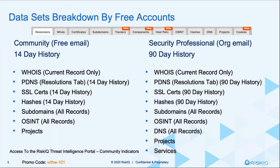This gives another overview of the breakdown in data sets by free accounts. Again, as a community user, you're only going to get 14 days of history for our PDNS, SSL, as well as hash information. As a security professional with an organizational license and corporate domain, you'll have access to 90 days of history, as well as the services, as Benjamin and I just talked about.